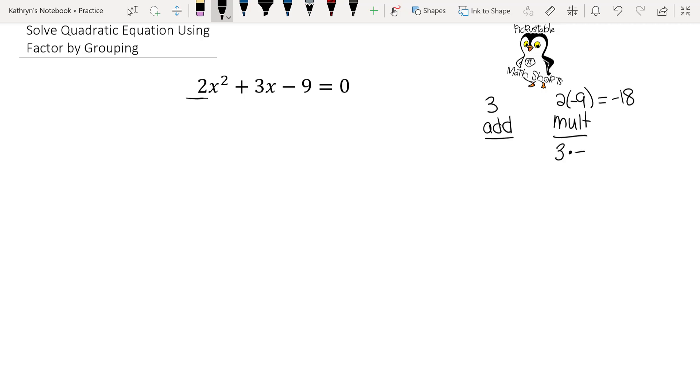Well 3 times negative 6 is negative 18, but if I take 3 minus 6, I get negative 3. Since they're just the opposite, all I'm going to do is change my signs. Negative 3 times 6 is negative 18, and negative 3 plus 6 is 3, and we have our magic numbers.